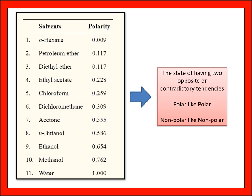The polarity index ranges from n-hexane at the lowest to water at maximum. The order is: n-hexane, petroleum ether, ethyl acetate, chloroform, dichloromethane, acetone, n-butanol, ethanol, methanol, and water.